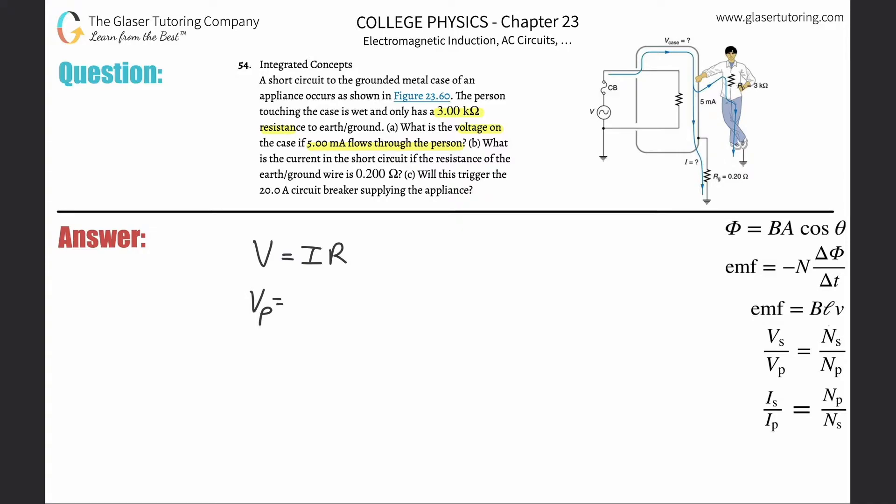We just simply plug in the values. This is 5 milliamps, we need that in amps, so simply take that and multiply it by 10 to the minus third. This is kilohms and we need that in ohms, so this is going to be 3 times 10 to the positive three ohms. And then the voltage flowing through the person now is going to be 15 volts.